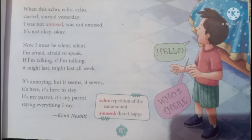'It's annoying, but it seems, it seems, it's here, it's here to stay.' The boy is saying it is annoying and it seems it is here to stay — someone is here to stay. And who is that someone? 'It's my parrot, it's my parrot, saying everything I say.' Now he reveals that it seems to him — or he is feeling — like there is his parrot who is repeating everything after him.